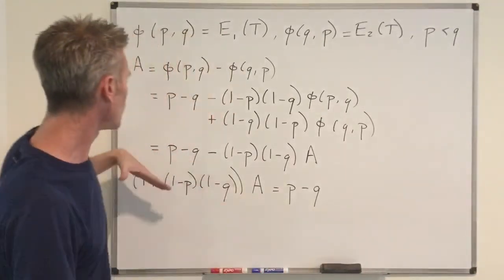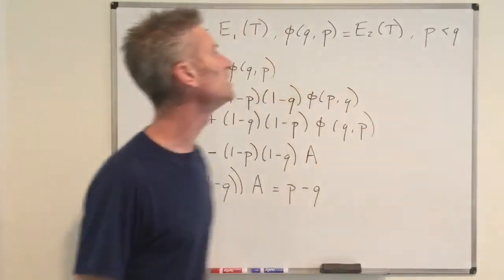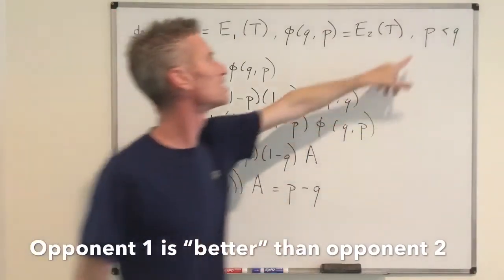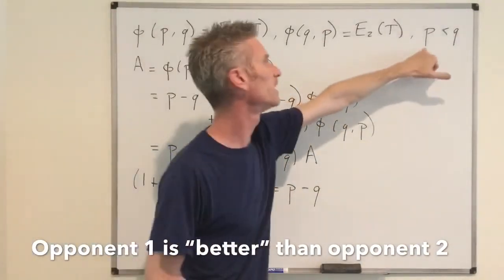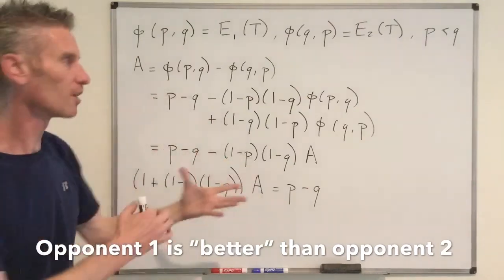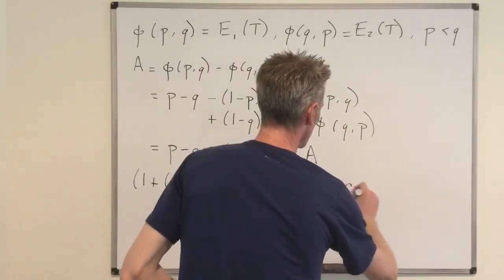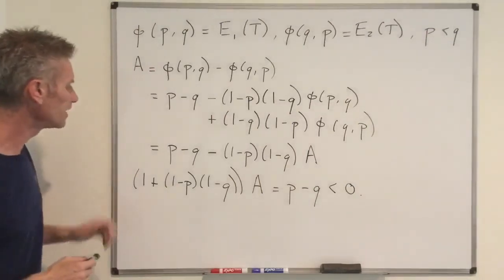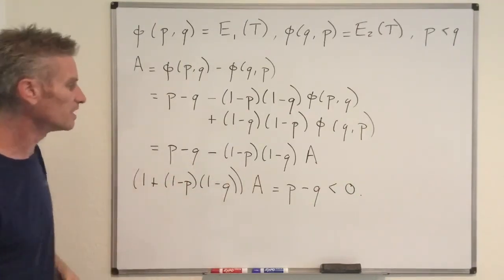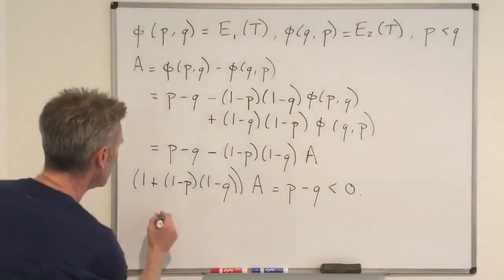Now we are done with the algebra and just need a simple reasoning to conclude. We know that P is less than Q, meaning opponent 1 is the stronger opponent — the probability our player wins against opponent 1 is smaller. Under this condition, P - Q is negative. And clearly (1-P) is between 0 and 1, same for (1-Q), so their product is positive, and adding 1 keeps it positive. Therefore A must be negative.